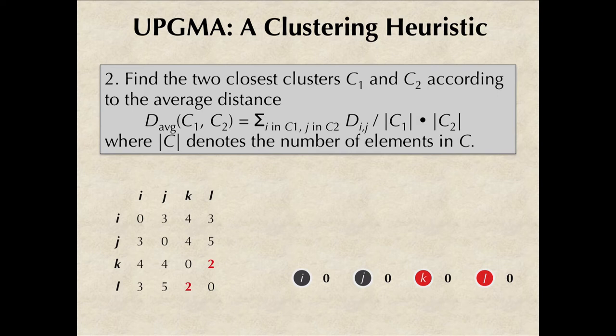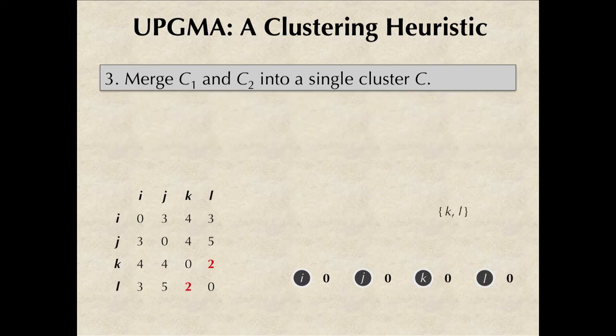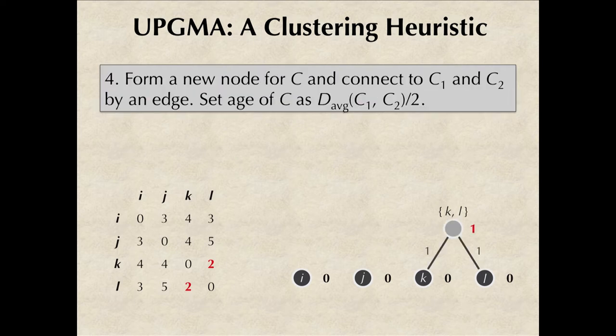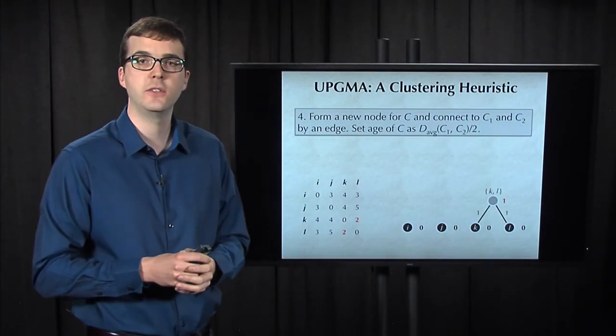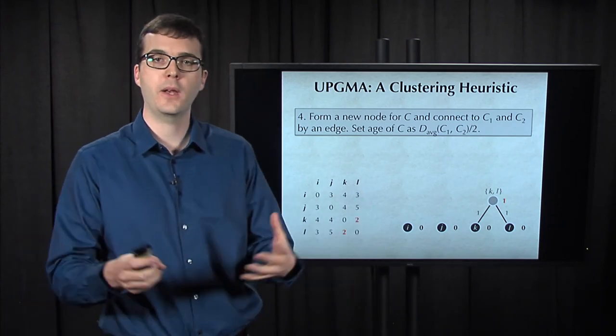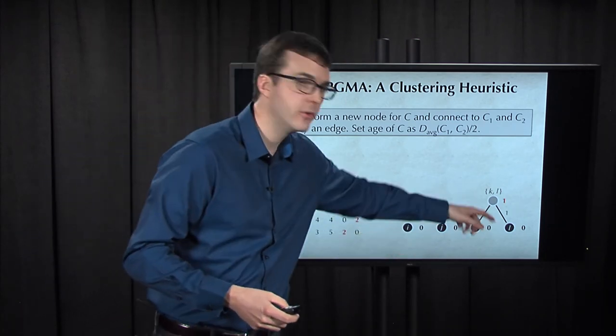So once we've found the two closest clusters, C1 and C2, we can merge them into a single cluster C. Here we put K and L into a cluster together because they're the closest. We then can form a node for C and connect that node to both C1 and C2. We then set the age of this internal node equal to half of this average distance between C1 and C2. So we saw that the distance from K to L was 2, so the age of this node is just 1.